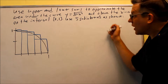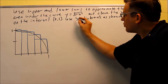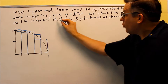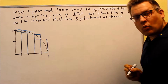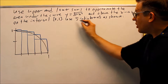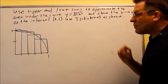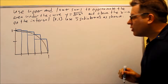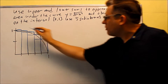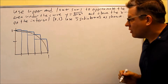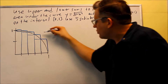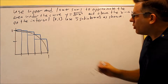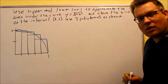For this one, we're given y equals the square root of 1 minus x squared. We're on the interval between 0 and 1, and it's telling us to use 5 subintervals, so it's been drawn for us already here. We have the curve in black, and then in blue we have the different rectangles that we're using for lower sum and upper sum.